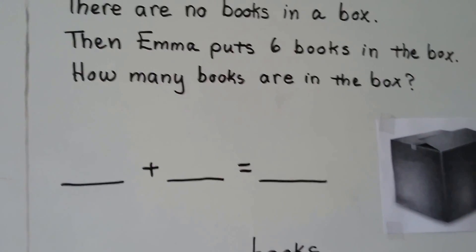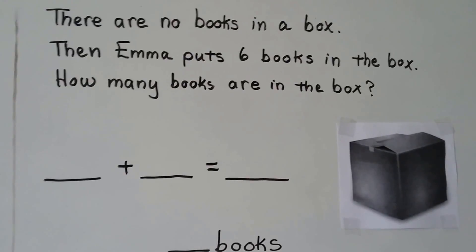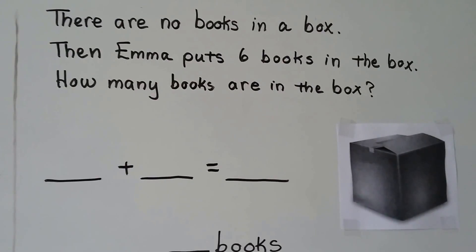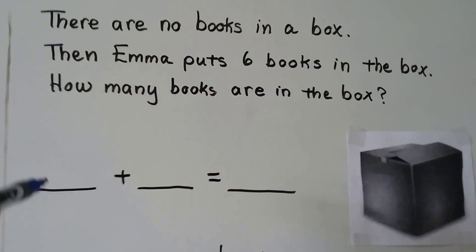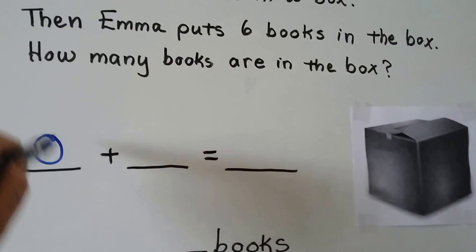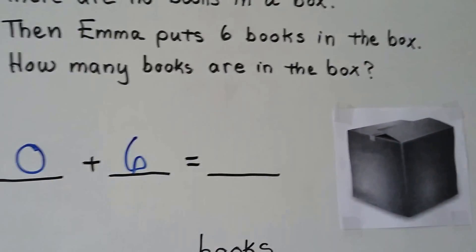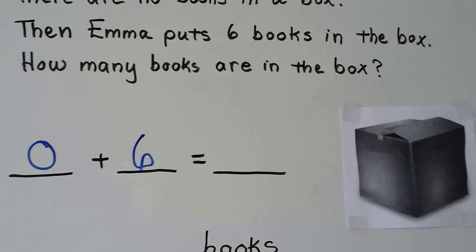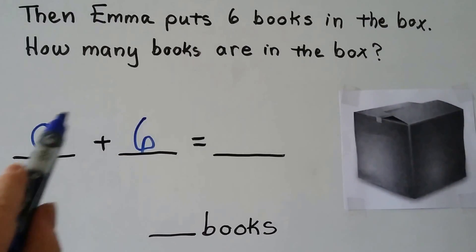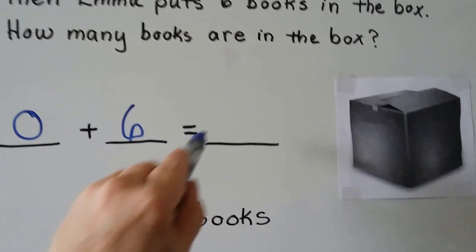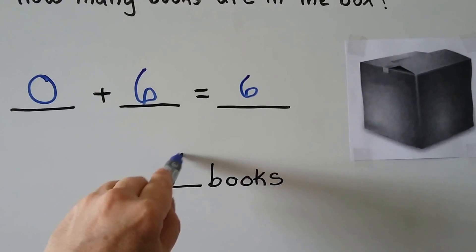There are no books in this box. Then Emma puts six books in the box. How many books are in the box? There were no books in the box — that's zero. Then Emma put six books in the box. Zero plus six — whenever you add zero to a number, it stays the same — so there are six books in the box.